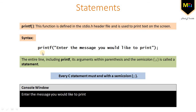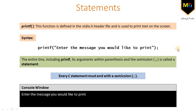The entire line including printf, its arguments within the parenthesis, and the semicolon is called a statement — this is called a C-statement. Something to remember while writing a C program is that every C-statement must end with a semicolon. When the printf statement is executed, it prints the message written within the double quotes on the console window.